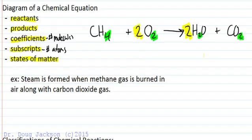Now we have to pull states of matter from the information. And steam, we know, is gaseous water. Methane gas, it tells us methane is a gas, natural gas, is burned in air along with carbon dioxide gas. So we get all of these directly, steam indirectly. And then oxygen we know is a diatomic gas because we've learned that from our elements chapter. So we've got all the parts necessary for the chemical equation at this point.